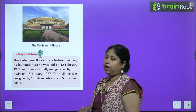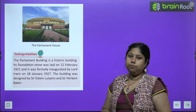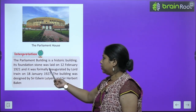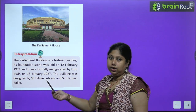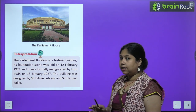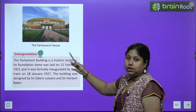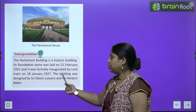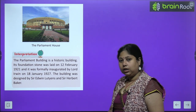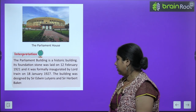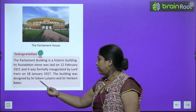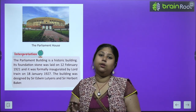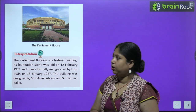This is the Indian Parliament House — a historical building. Its foundation stone was laid on 12 February 1921, even before independence. It was inaugurated on 18 January 1927. The building was designed by Sir Edwin Lutyens and Sir Herbert Baker.